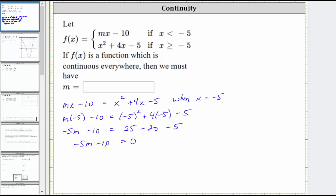And now we solve for m. We add 10 to both sides and then divide by negative five. Adding 10 to both sides gives us negative five m equals 10. Dividing both sides by negative five, simplifying, we have m equals negative two.